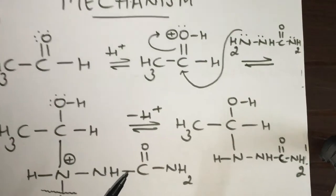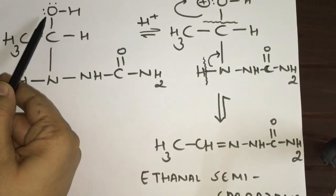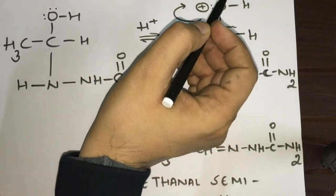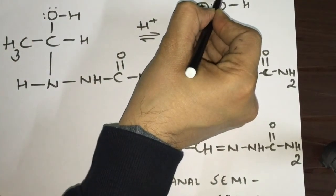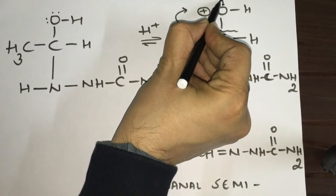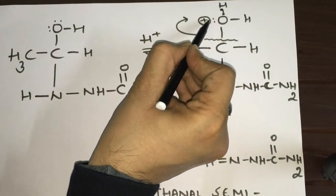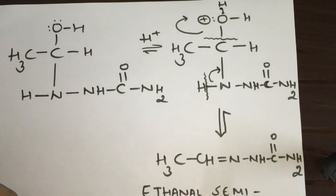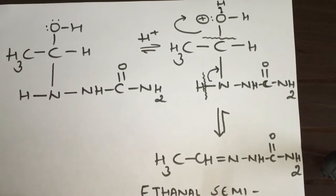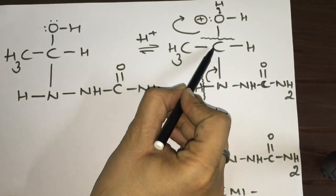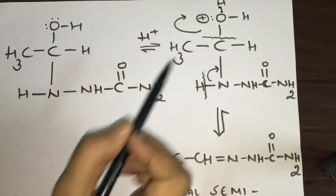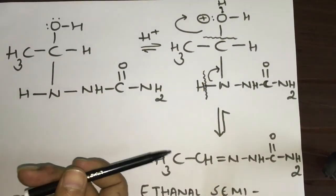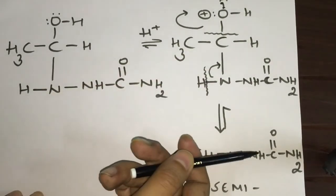Now, since the medium is acidic, H+ attacks the lone pair of the oxygen on the addition product. Oxygen then bears a positive charge because the two electrons of oxygen are shared with H+. This makes water a good leaving group, and it leaves. We end up getting CH3–CH=N–NHCONH2.